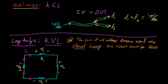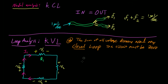What KVL says is that if we sum up all of these voltage differences — V1 plus V2 plus V3 plus V4 — around this closed loop in the circuit, that has to sum to zero. This closed path is exactly what we mean by a closed loop, and this is what we'll be using the whole time we're doing loop analysis.